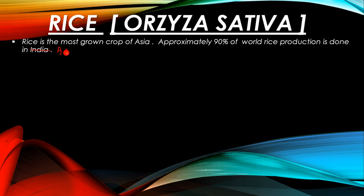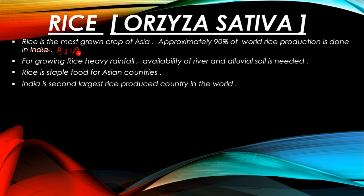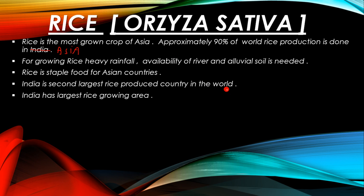For growing rice, heavy rainfall, availability of water, and alluvial soil are needed. Rice is the staple food for Asian countries. India is the second largest producer of rice in the world after China. India also has the largest rice growing area.